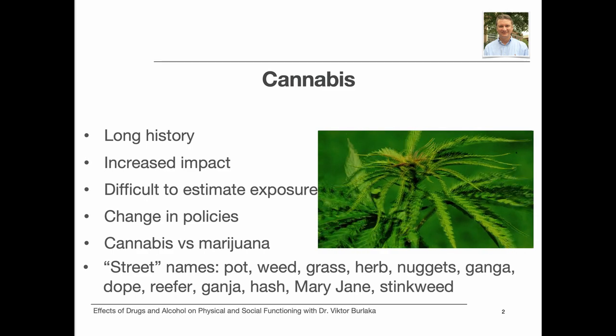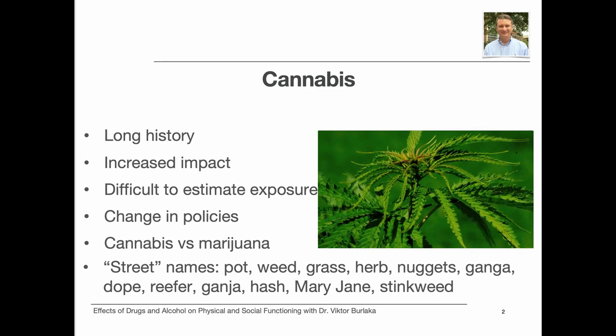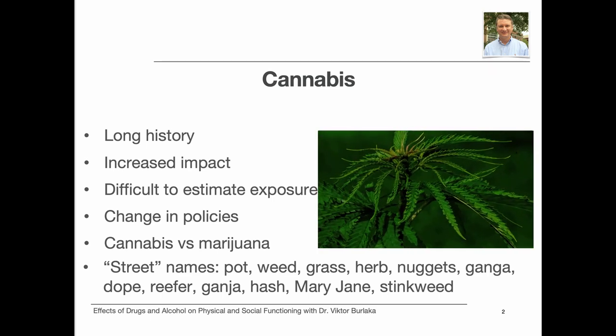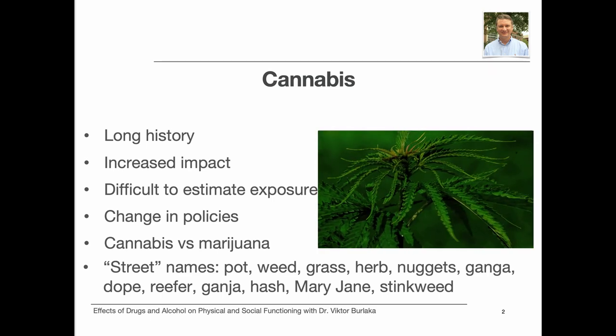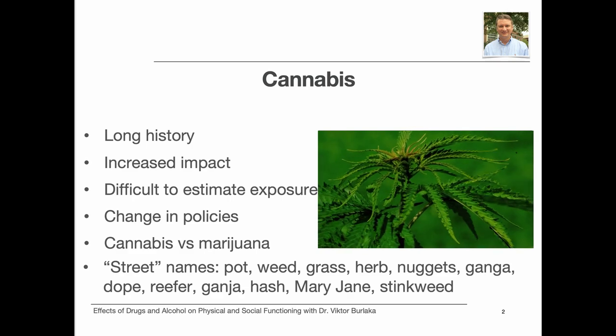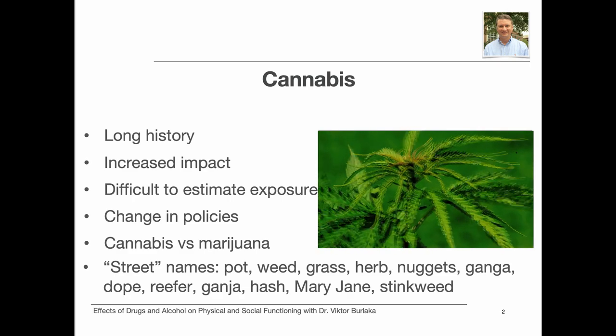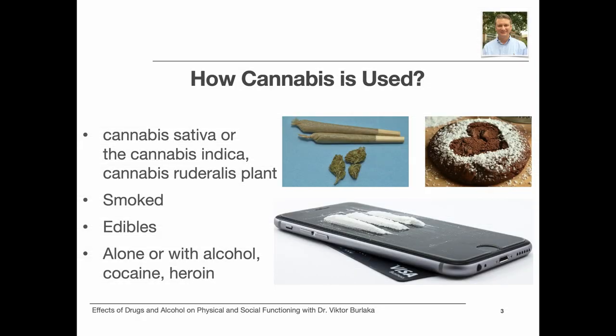Common street names for cannabis, or marijuana, include pot, weed, grass, herb, nuggets, gonga, dope — although this can also mean heroin in some communities — reefer, ganja, hashish, mary jane, and stinkweed. Cannabis refers to several psychoactive substances derived from either the cannabis sativa or the cannabis indica plant, and less commonly the cannabis ruderalis plant.